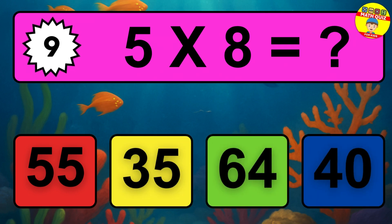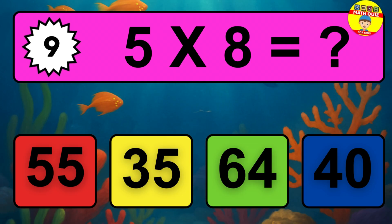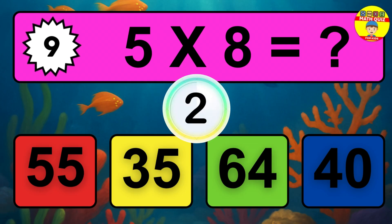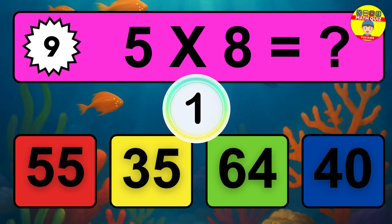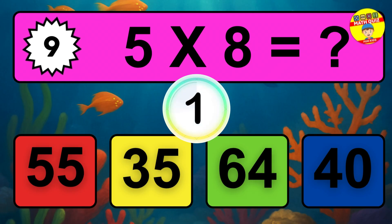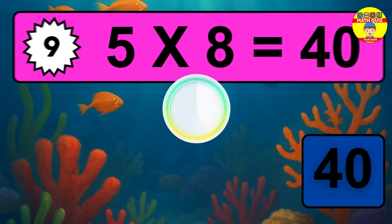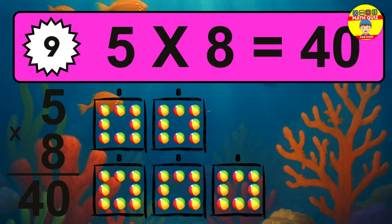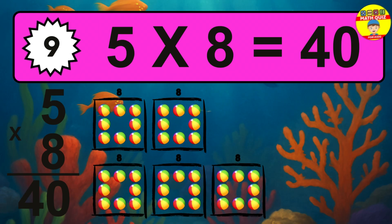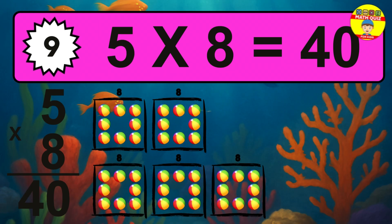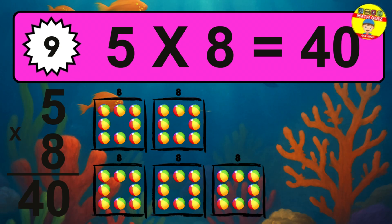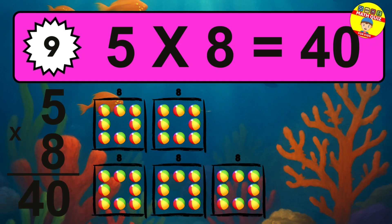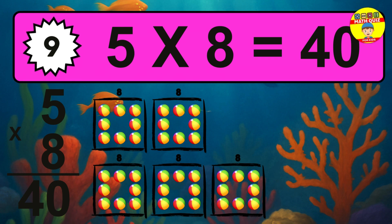Question 9. 5 times 8 equals what? The answer is 5 times 8 is 40. To calculate, we have 5 groups with 8 balls each one. So, how many balls do we have? 40 balls.